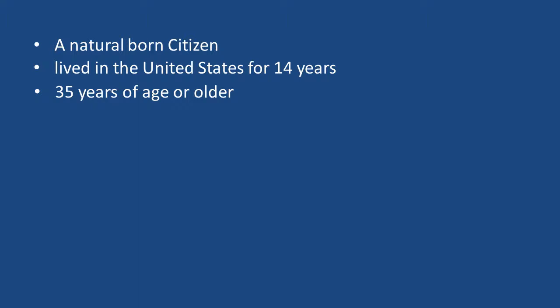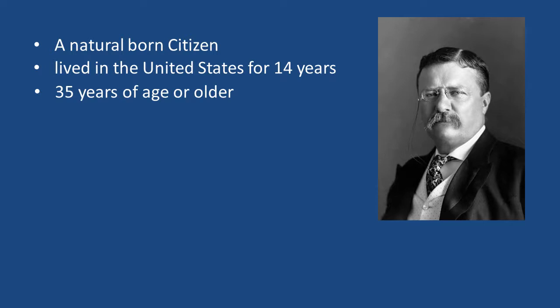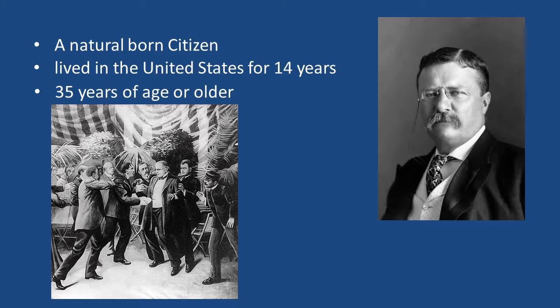To be president, you have to be a natural-born citizen, have lived in the United States for 14 years, and be 35 years of age or older. The youngest man to ever become president was Theodore Roosevelt, who on September 14, 1901, assumed office at the age of 42 following the assassination of President William McKinley. If the president dies in office, resigns, or is removed from office, the powers and duties of the said office shall devolve upon the vice president.